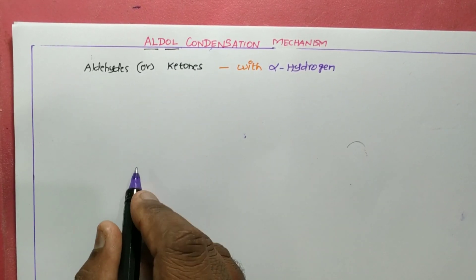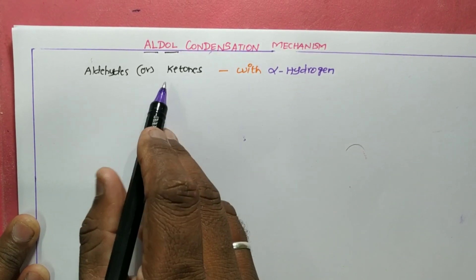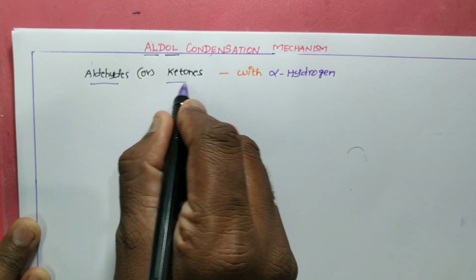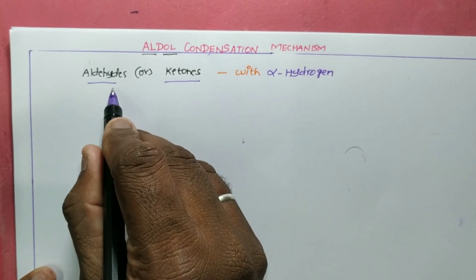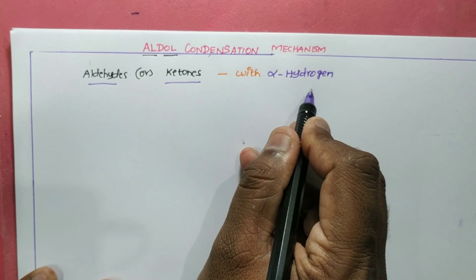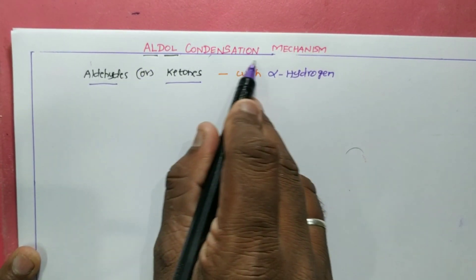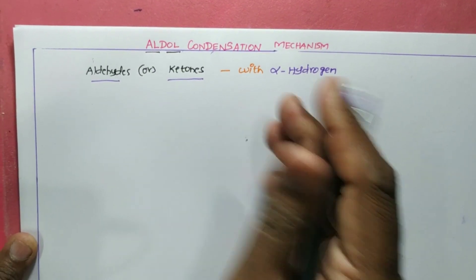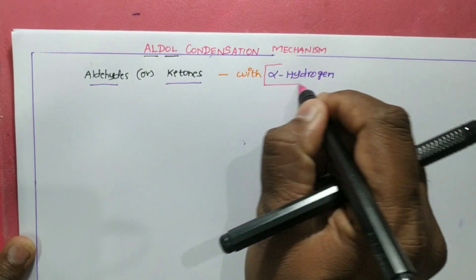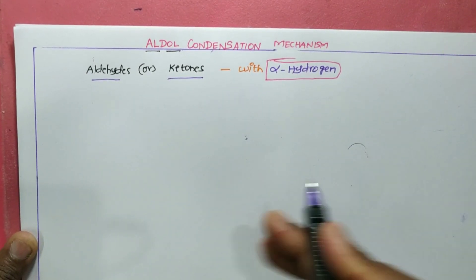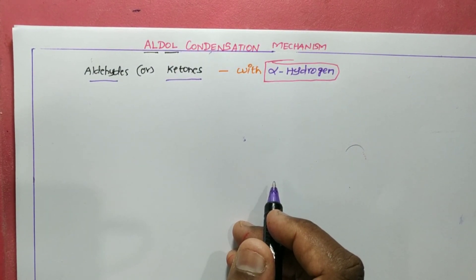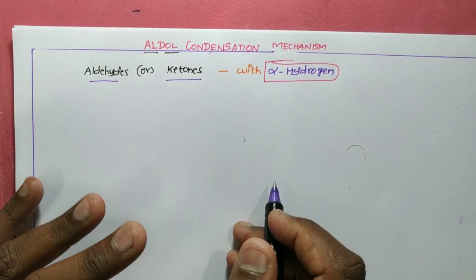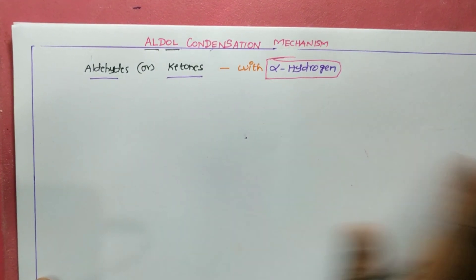In general, carbonyl compounds like aldehydes and ketones are involved in aldol condensation reactions. However, not all aldehydes and ketones undergo this reaction — only those with alpha hydrogen undergo aldol condensation. The first and most important condition is that the molecule must have alpha hydrogen. Without alpha hydrogen, there is no aldol condensation.